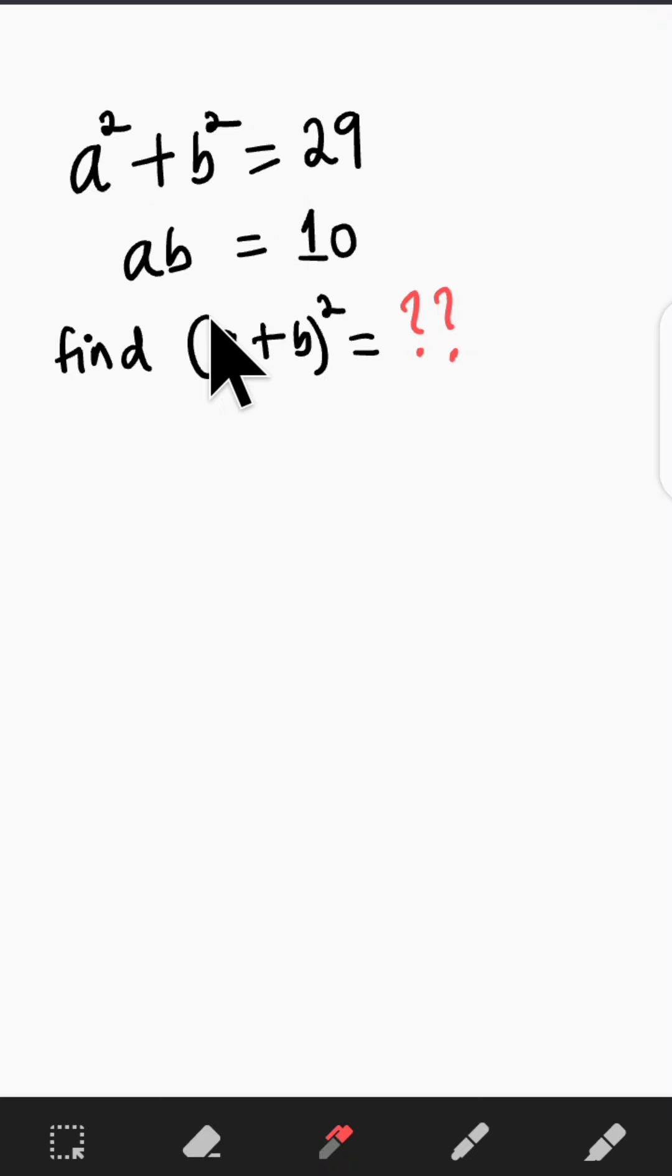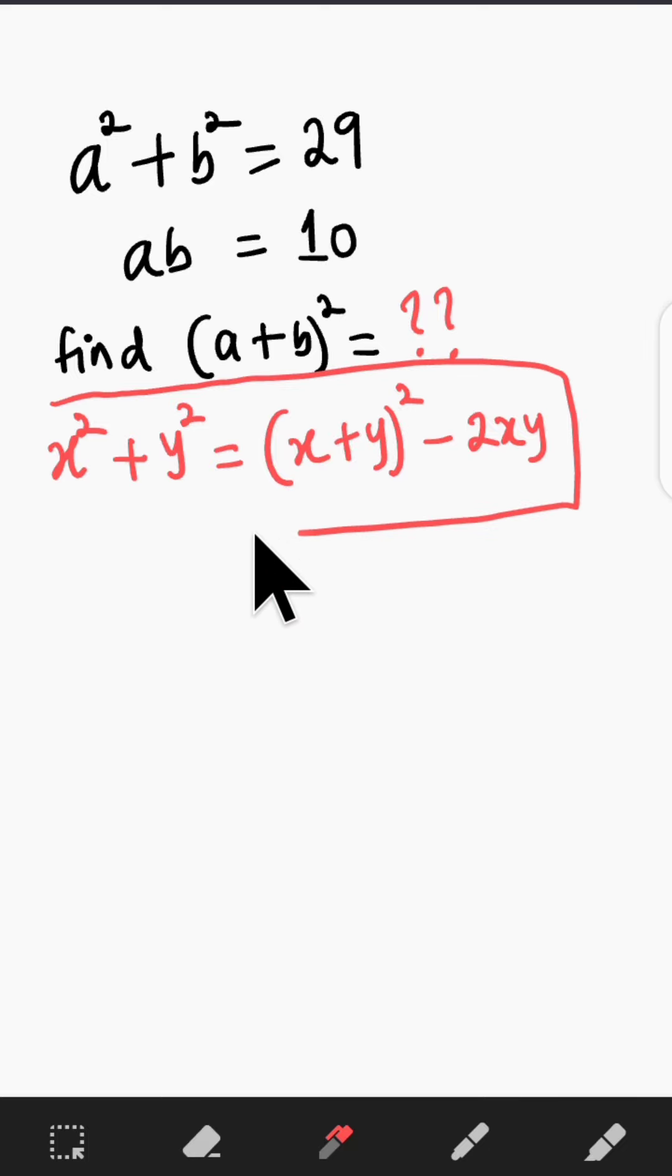Now to solve this problem is very easy if you remember the sum of squares. The sum of squares says if you have x squared plus y squared, the result is x plus y all squared minus 2xy. Don't ever forget this identity because that's exactly what you're going to use in this question.